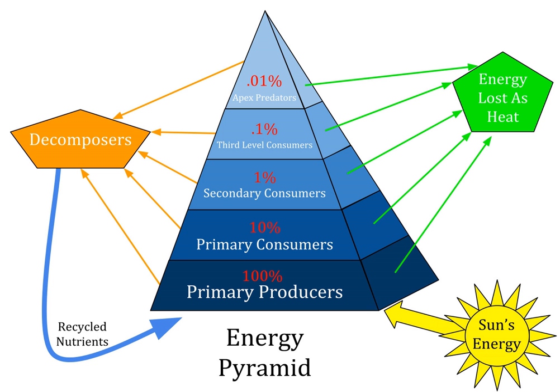An ecological pyramid is a graphical representation designed to show the biomass or bio-productivity at each trophic level in a given ecosystem. Biomass pyramids show how much biomass — the amount of living or organic matter present in an organism — is present at each trophic level, while productivity pyramids show the procreation or turnover in biomass. There is also a pyramid of numbers, which represents the number of organisms in each trophic level.